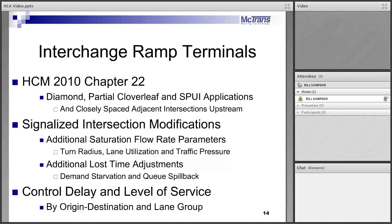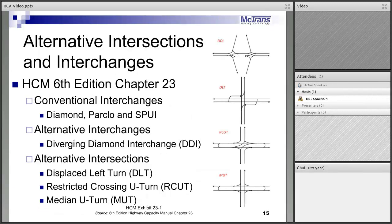Interchange ramp terminals in the 2010 manual were added primarily to change lane utilization, as people pre-position themselves in the upstream signal lane based on what they're going to do downstream, changing the lane utilization adjustment to saturation flow. Turn radius and traffic pressure are also implemented for ramp terminals. Level of service is based on experienced travel time by origin-destination pair. In the 6th edition, it was expanded to include three alternative intersections and one alternative interchange: the diverging diamond interchange, displaced left turn, restricted crossing U-turn (sometimes called super street), and median U-turn — all now modeled in the capacity procedures and software.